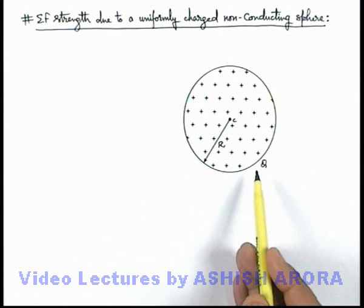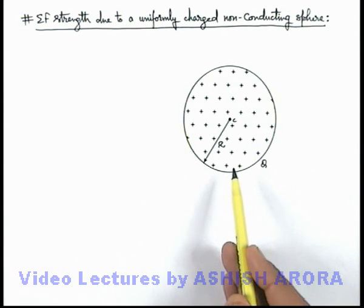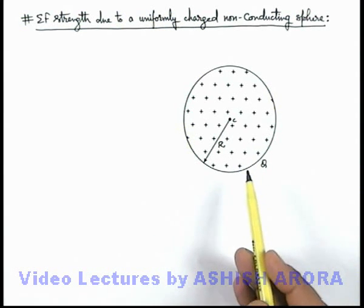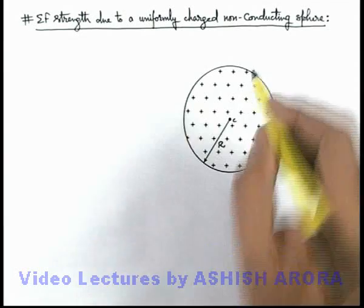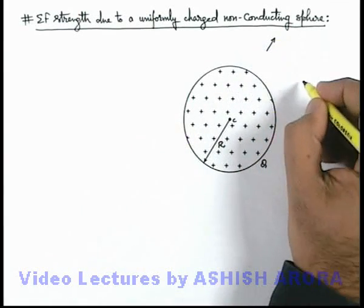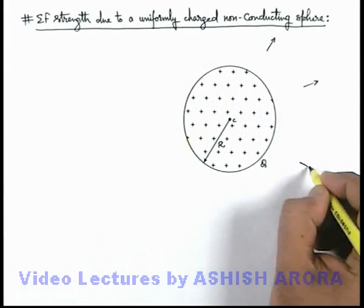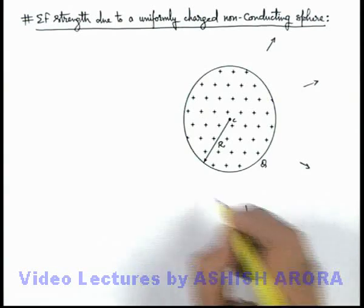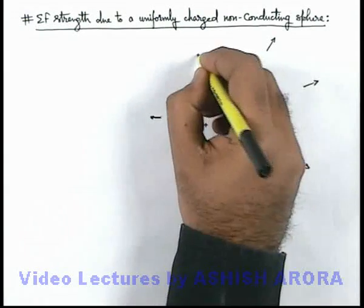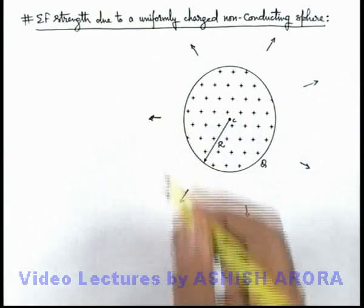In this situation, just like the case of the hollow sphere, we can directly state that due to the symmetry of charge distribution, in the outside region the electric field will exist in a radially outward direction, which is also symmetric with respect to the sphere.